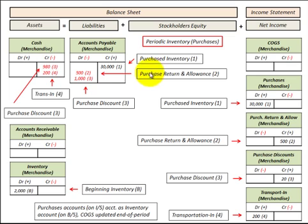Next, let's look at a purchase return and allowance. Say we return $500 worth of goods: we debit or decrease accounts payable by $500, and then we credit or increase the Purchase Returns and Allowances account by $500.